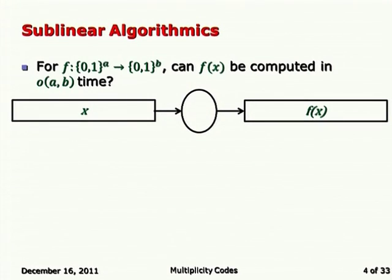Linear-time encoding and decoding was achieved by Spielman and by Sipser and Spielman, who showed constructions of codes for which encoding could be done in linear time, and for certain constants delta the error detection and error correction questions could also be solved in linear time. But we can go much further, which leads us to sub-linear algorithmics: algorithms running in time less than linear in the input or output size.